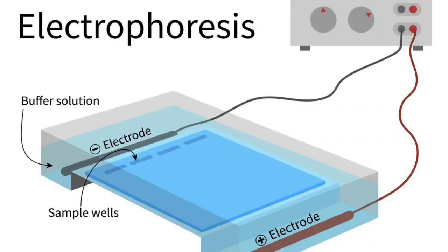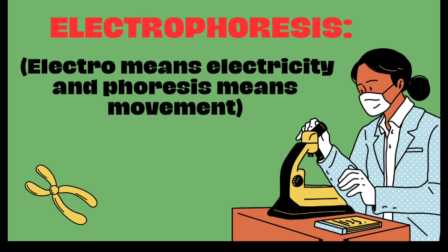Electrophoresis. The word breaks into two parts: electro means electricity and phoresis means movement.